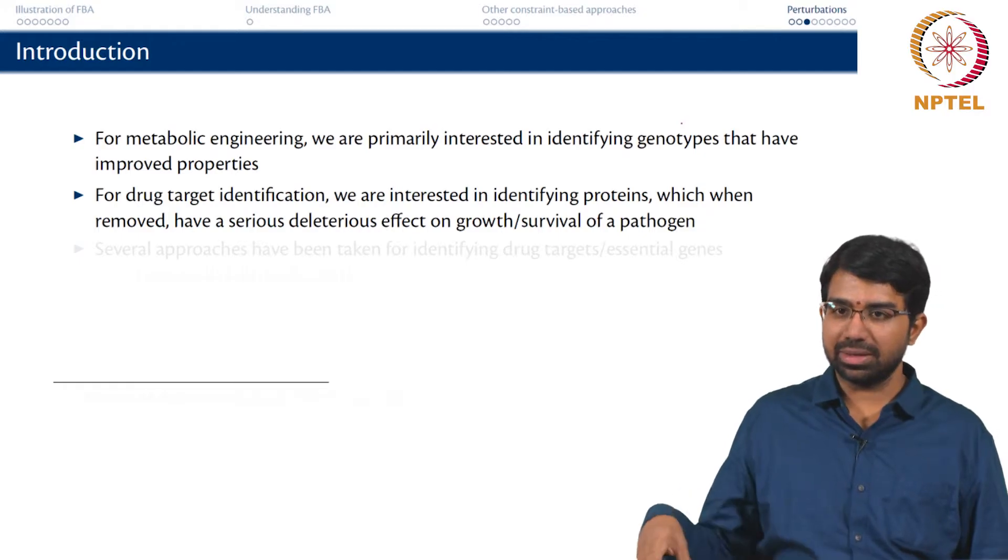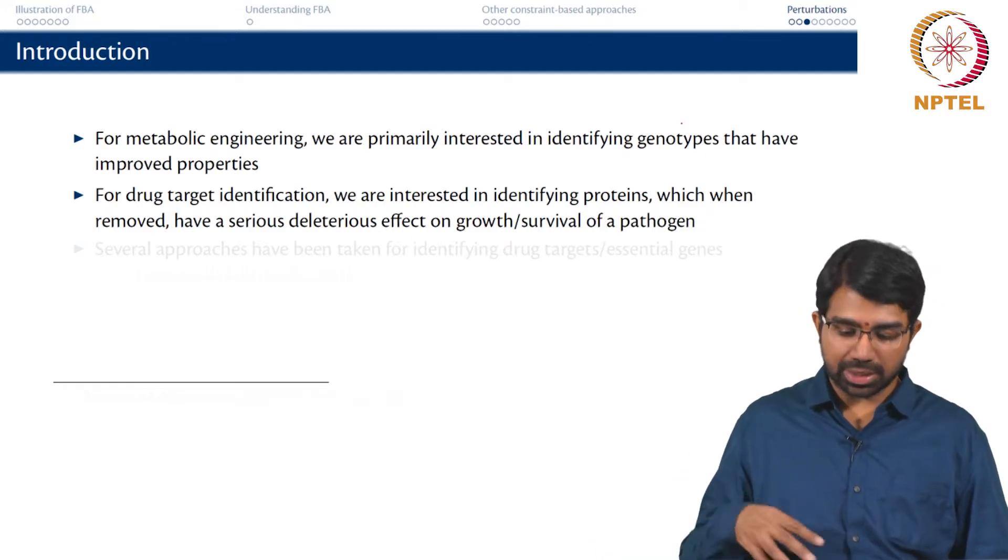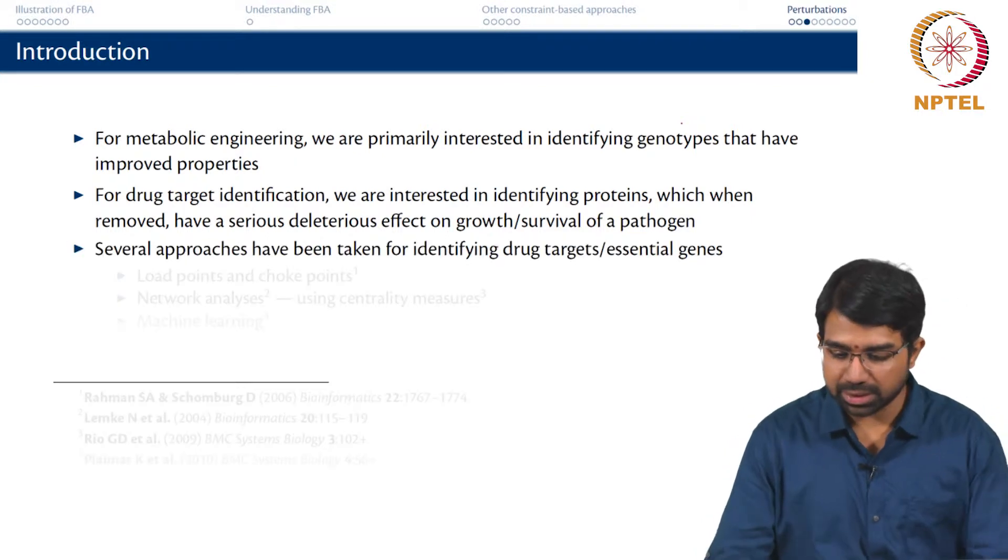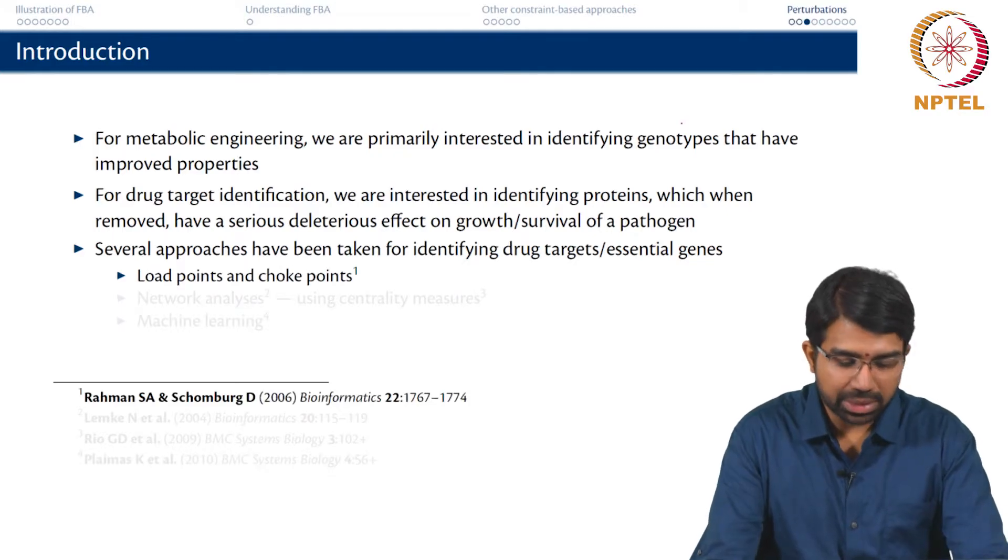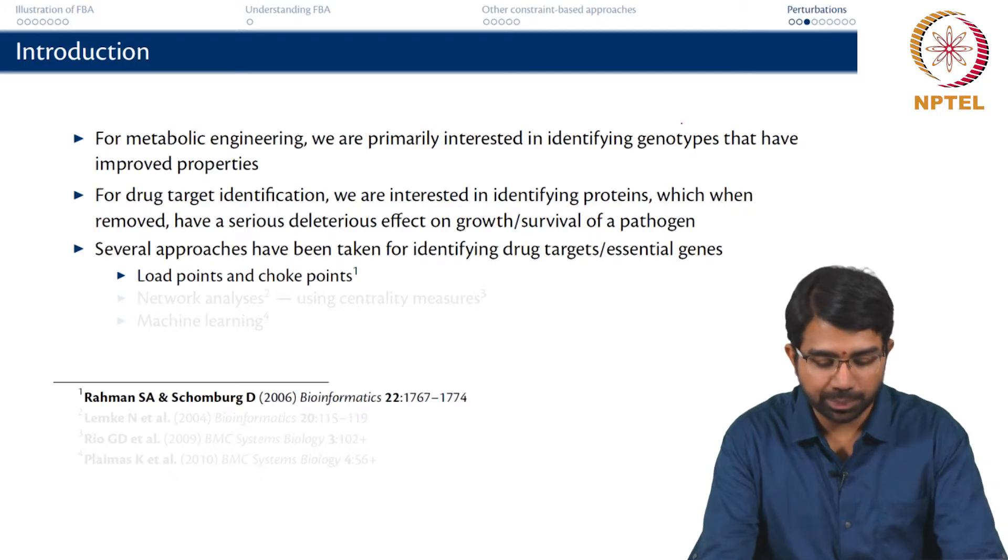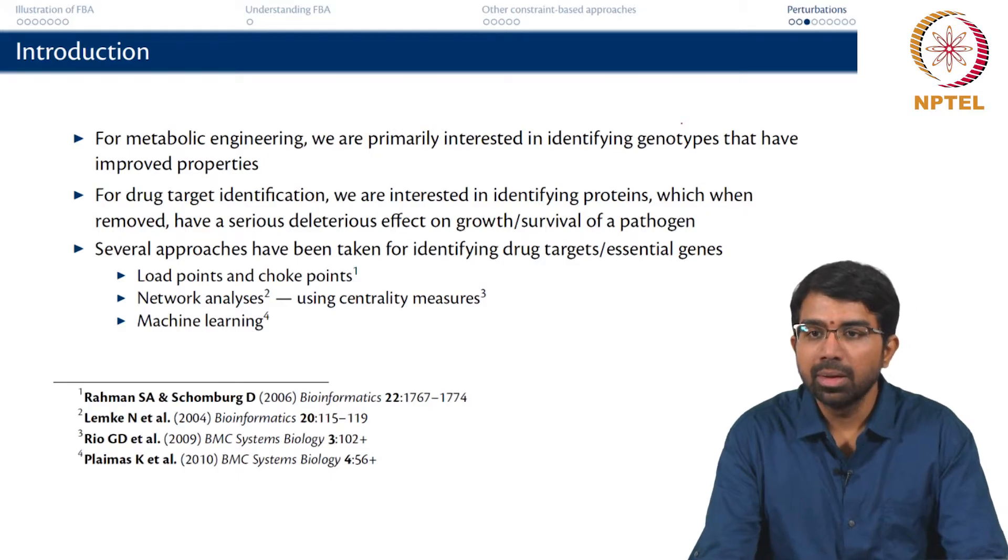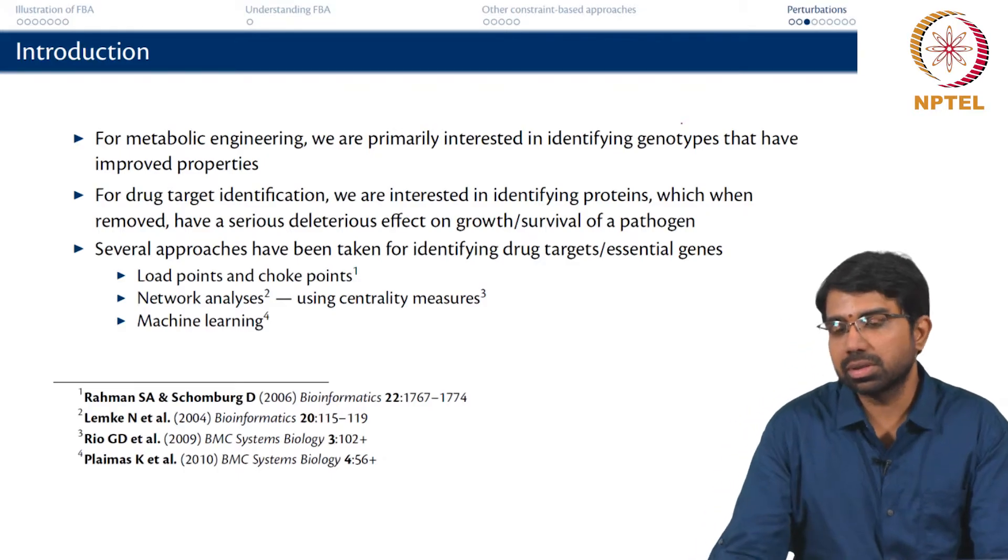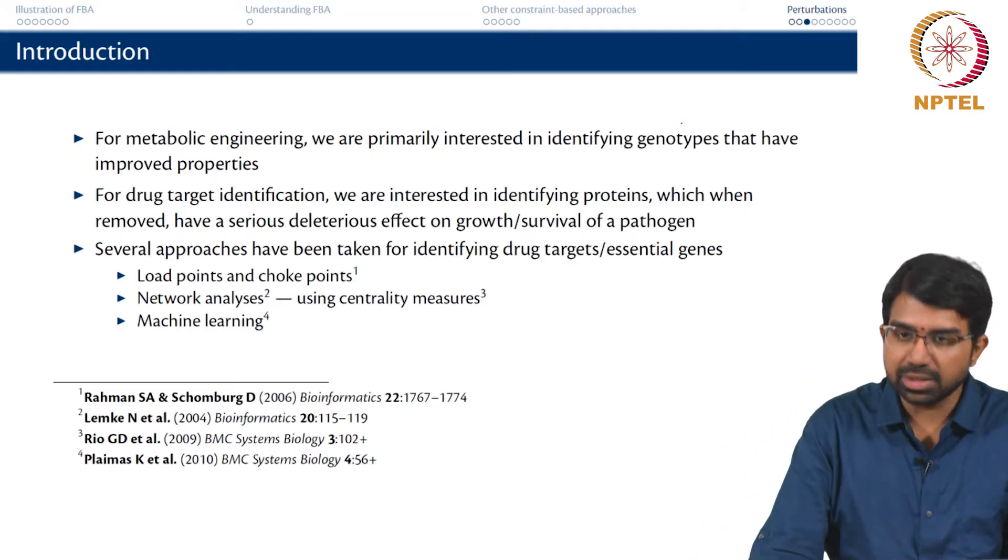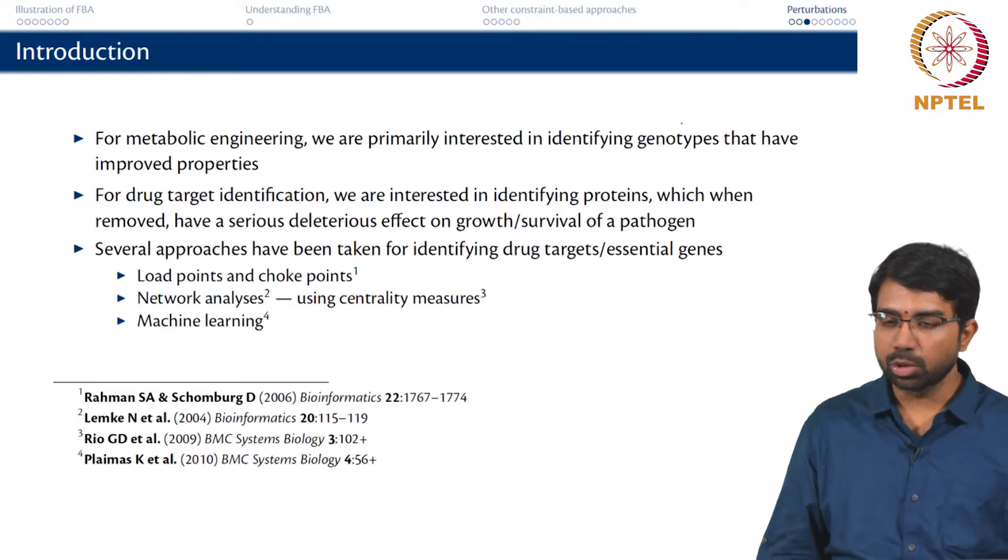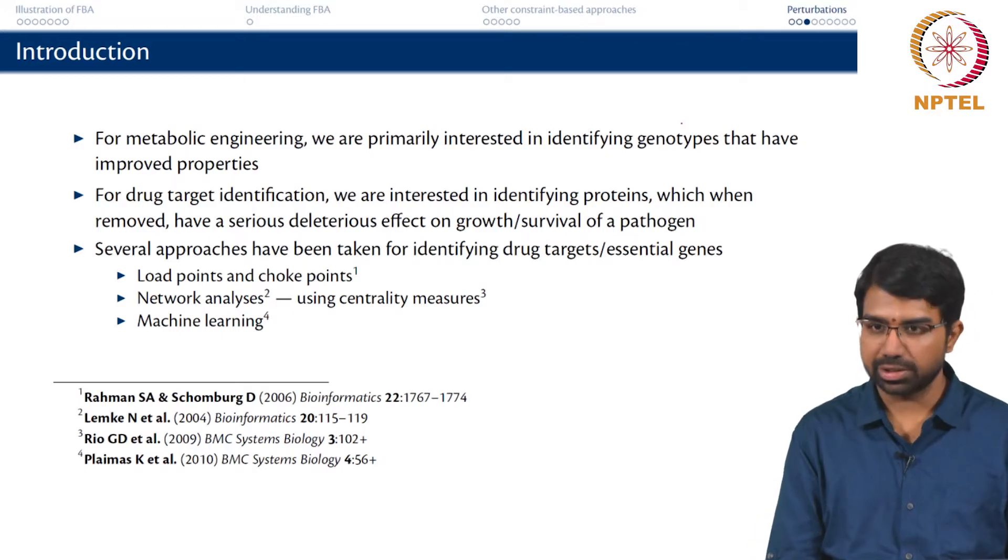What genes do I hit in the pathogenic organism so that I stop it from growing? There are many approaches that have been taken for identifying these kinds of essential genes. There are some basic network topology measures which look at load points and choke points. There are again centrality measures that have been used and machine learning, but the most effective or more reliable methods involve flux balance analysis because when you have a good model it can give you very robust predictions.